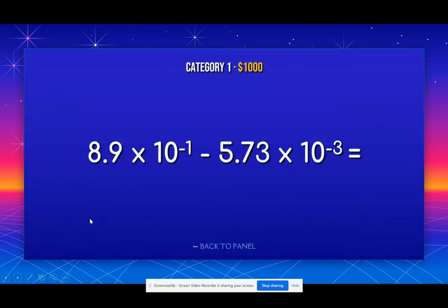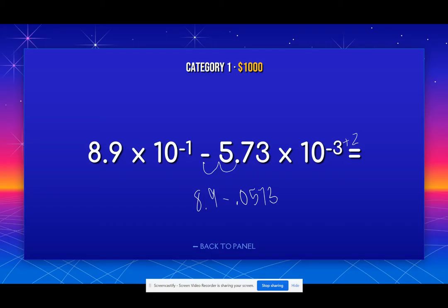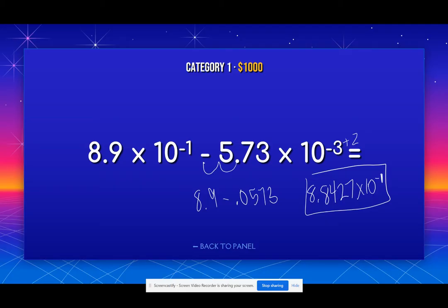So let's look at the second one. We have subtraction and negative exponents. Negative one is the bigger one, so we want to get this one to become negative one. To become negative one, I'm going to add 2 to the exponent. When I add 2, I move the decimal over 2. So now we have 8.9 minus 0.0573, and when I put that in my calculator, I get 8.8427. Every single time, you are going to move the smaller exponent to become the bigger one — add to the exponent and move your decimal place to the left by as many as you add.